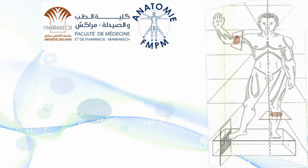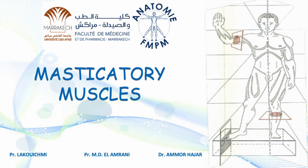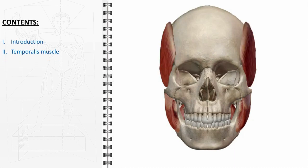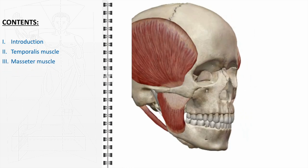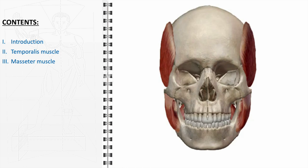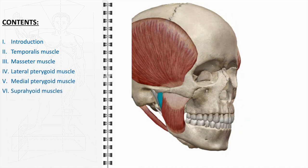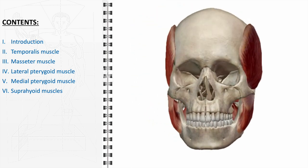In this video, we'll embark on a detailed exploration of the anatomy of the masticatory muscles, exploring their structure and functions. We will start with an introductory overview, setting the stage for a comprehensive understanding. Following the introduction, we will examine each muscle individually, covering the temporalis, masseter, lateral pterygoid, medial pterygoid, and suprahyoid muscles. Each segment will delve into the unique structure and function of these muscles.